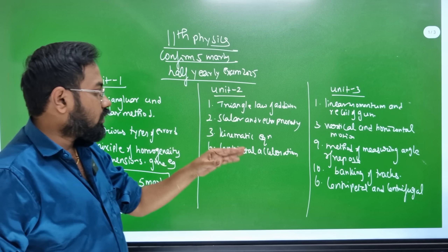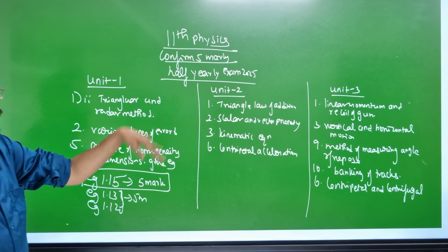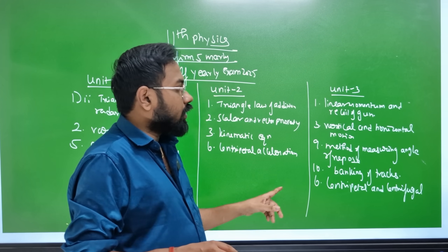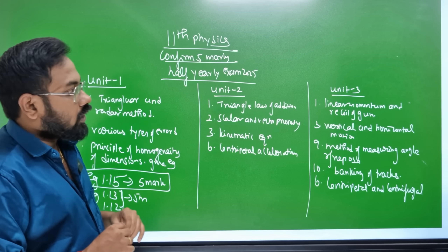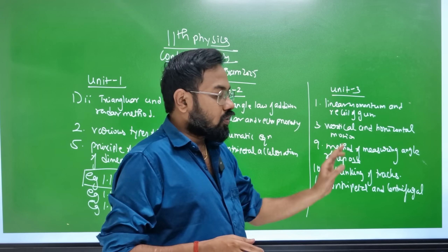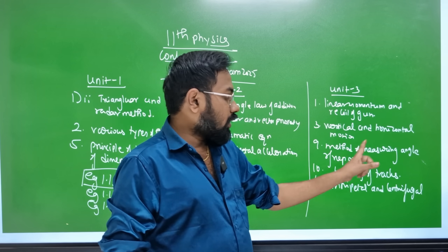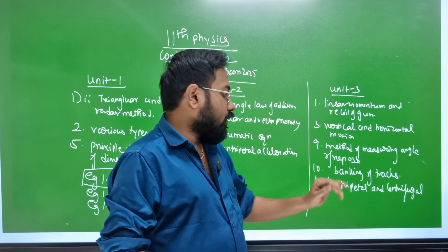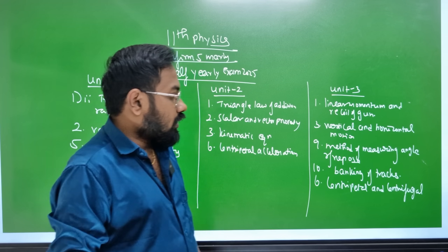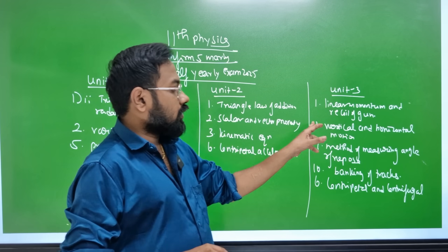Units 2 and 3 cover: Triangle of Addition, Scalar and Vector properties, Kinematic Equations, and Centripetal motion. Topics also include Vertical and horizontal motion, Angle of Repose, Banking of Tracks, and Centripetal and Centrifugal forces.